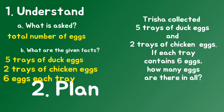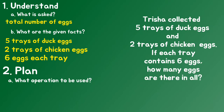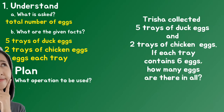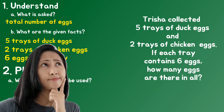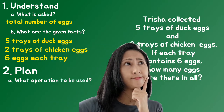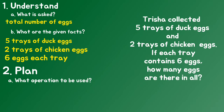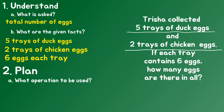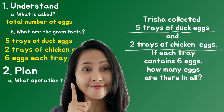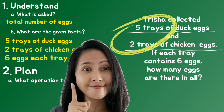Then we have to make a plan. What operation should be used? Which word suggests that we need to multiply, add, or subtract? In the problem, you can see that Trisha has collected five trays of duck eggs and two trays of chicken eggs. What is this information telling us? We need to know the total number of trays.